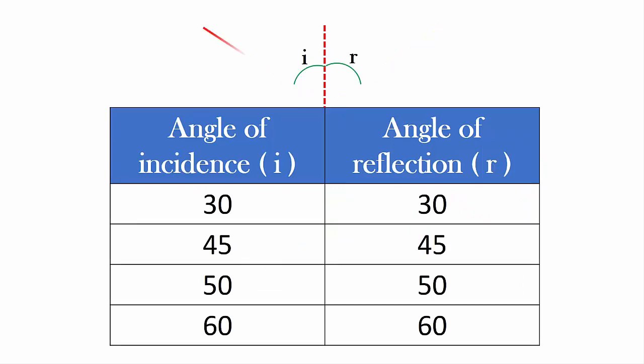Carefully observing the result of the experiment, you will clearly see that the angle of incidence equals the angle of reflection. This is called the first law of reflection.